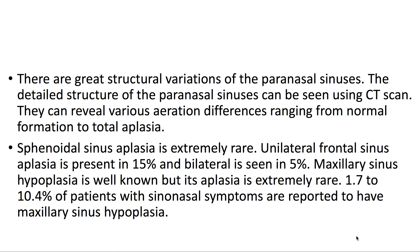There are great structural variations of the paranasal sinuses. The detailed structure of the paranasal sinuses can be seen using CT scan, which can reveal various aeration differences ranging from normal formation to total aplasia. Sphenoidal sinus aplasia is extremely rare. Unilateral frontal sinus aplasia is present in 15%, and bilateral is seen in 5%. Maxillary sinus hypoplasia is well known, but its aplasia is extremely rare. 1.7% to 10.4% of patients with sinonasal symptoms are reported to have maxillary sinus hypoplasia.